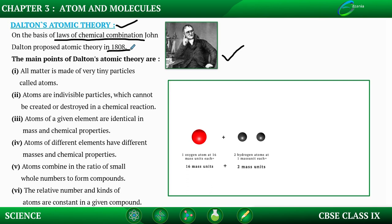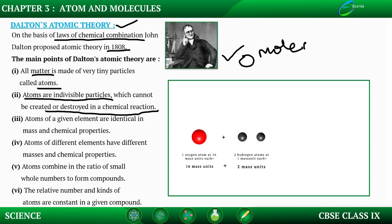Dalton said all matter is made up of very tiny particles called atoms. We have already learned that matter is made up of atoms. He also said that atoms are indivisible particles — that is, they cannot be created nor destroyed in a chemical reaction. Since the atom is the basic unit of a molecule, this atom cannot be destroyed and no new atom can be formed. So it is called an indivisible particle.